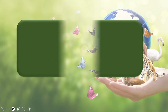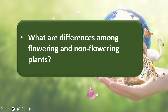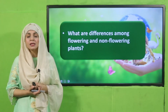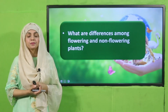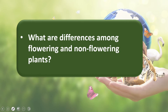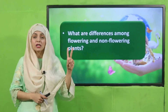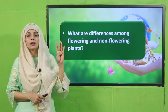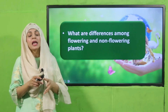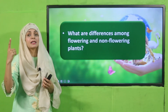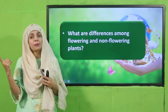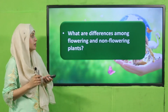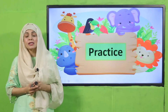Now is the time for evaluation. Answer the question: what are the differences among flowering and non-flowering plants? Flowering plants have flowers; non-flowering plants do not. Flowering plants have seeds; non-flowering plants reproduce through spores and buds. If non-flowering plants have seeds, their seeds are not enclosed like those of flowering plants. These are the differences among flowering and non-flowering plants.